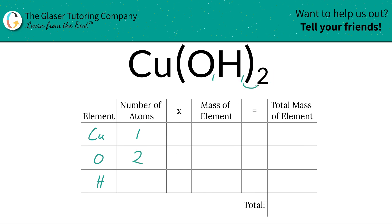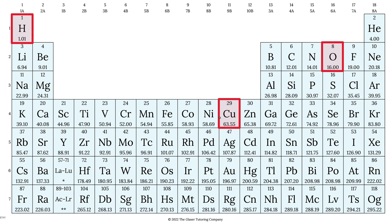Same thing for hydrogen. There's a one here, but there's an outer subscript. So just multiply those two numbers together, and that means two hydrogen. Then what we're going to do is take those number of atoms and multiply it by the mass of the element. These masses are found on the periodic table, so let's take a look.